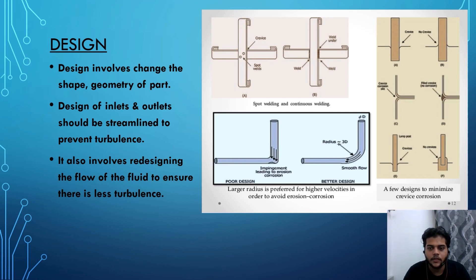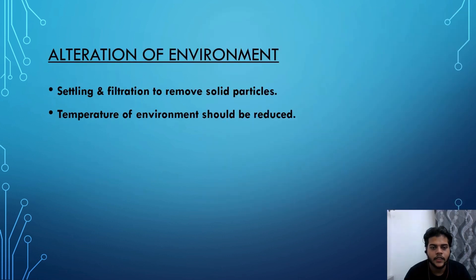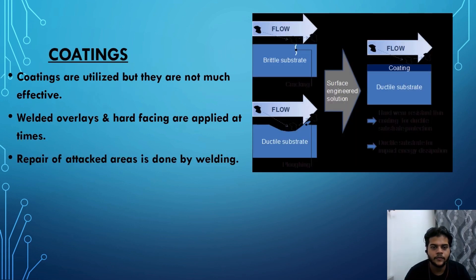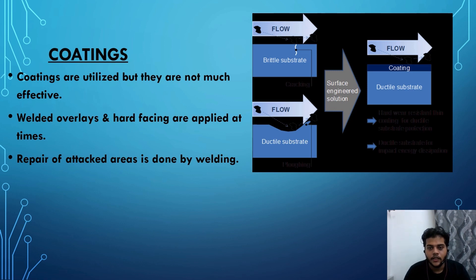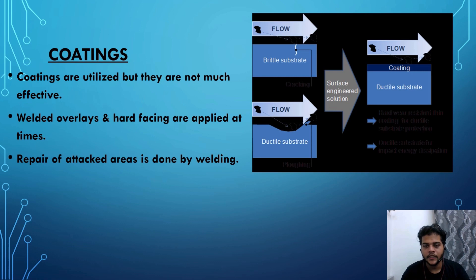Here are some examples of erosion corrosion happening in poor design. Alteration of environment: cleaning and filtration to remove solid particles, and the temperature of the environment should be reduced. Regarding coating: coatings are utilized but they are not very effective. Welded overlays and hard facings are applied at times, and repair of attacked areas is done by welding. Here are some examples of coating — the first image shows a brittle substrate, and the second shows a degraded substrate where erosion corrosion has taken place. After the coating process, a new protective substrate is formed.